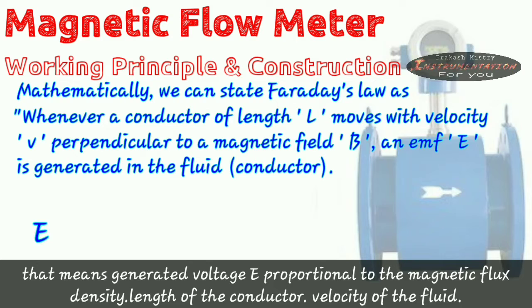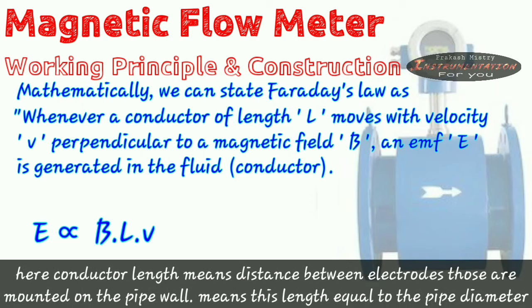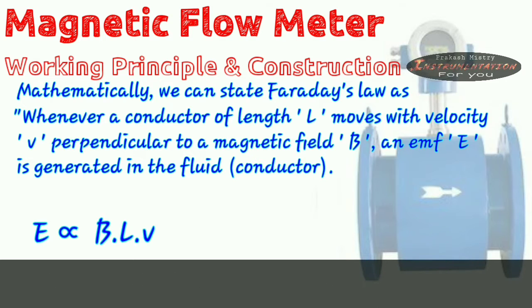That means generated voltage E is proportional to magnetic flux density into length of the conductor into velocity of the fluid. Here conductor length means distance between electrodes those are mounted on the pipe wall. This length equals to the pipe diameter.